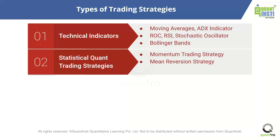Quant strategies are mostly divided into two types. You have the momentum trading strategy, where you think an asset is trending — either trending up, meaning the asset price is increasing, or trending down, meaning it's decreasing. Either way, it has momentum, and you create a strategy to capture that momentum effect. This works in certain market regimes, but the market won't always be trending. There will be times when it's stagnant, and in those cases you use a mean reversion strategy, where the price moves up or down but returns to a certain mean level.